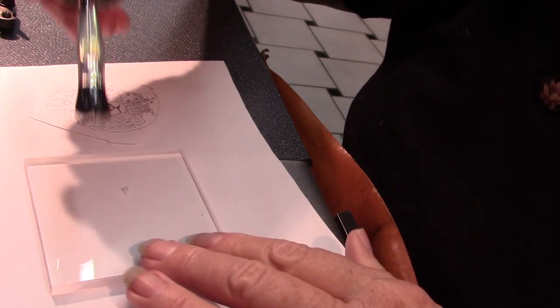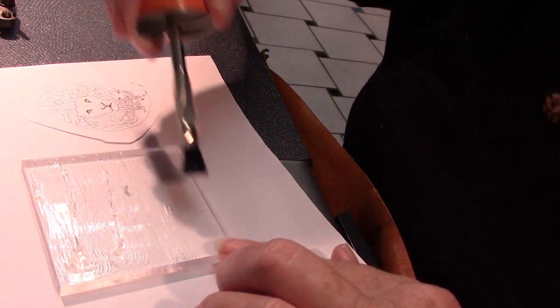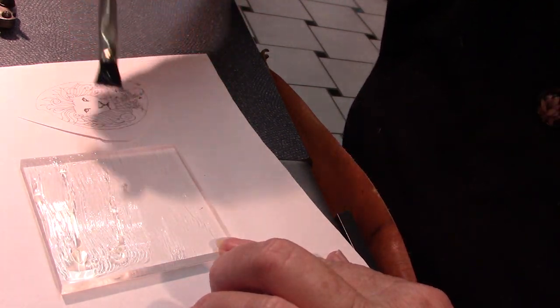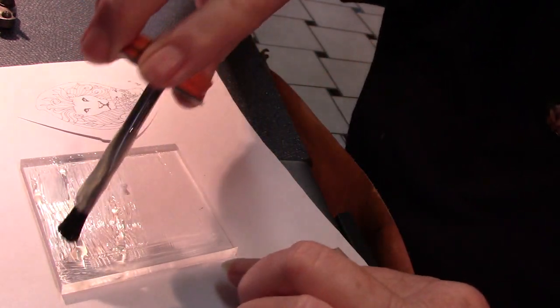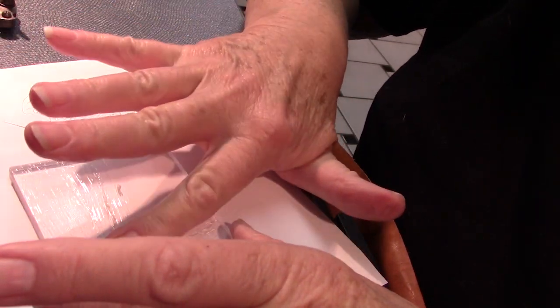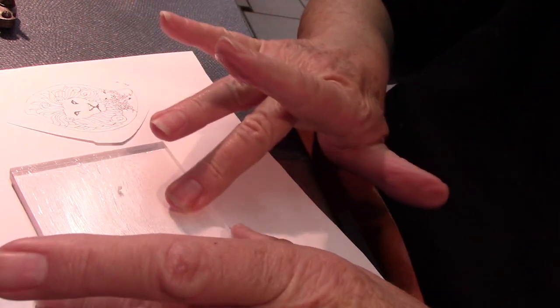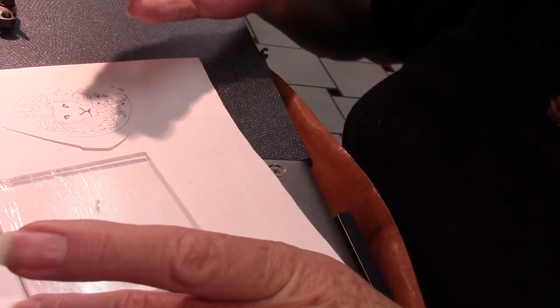And I am going to cover the entire plexiglass with a thin layer of rubber cement. And I am going to wipe off the excess. I don't want to have a lot of extra rubber cement on that.